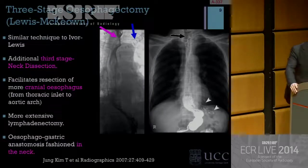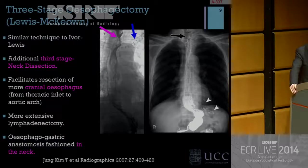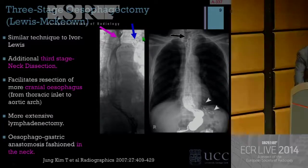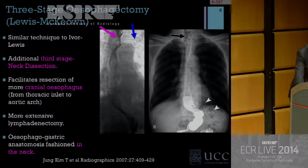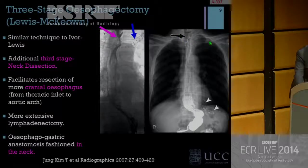There are modifications including the three-stage esophagectomy, or Lewis-McKeown procedure. Essentially it's the same procedure but with an added incision in the neck, allowing the surgeon to resect the esophagus more cranially and obtain a more extensive lymphadenectomy. On imaging you may find the suture line in the neck, but the key thing is that the anastomosis is higher up at the level of the neck.